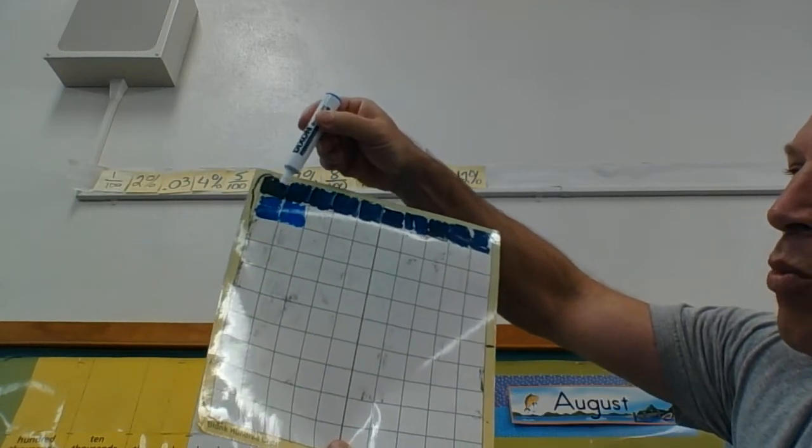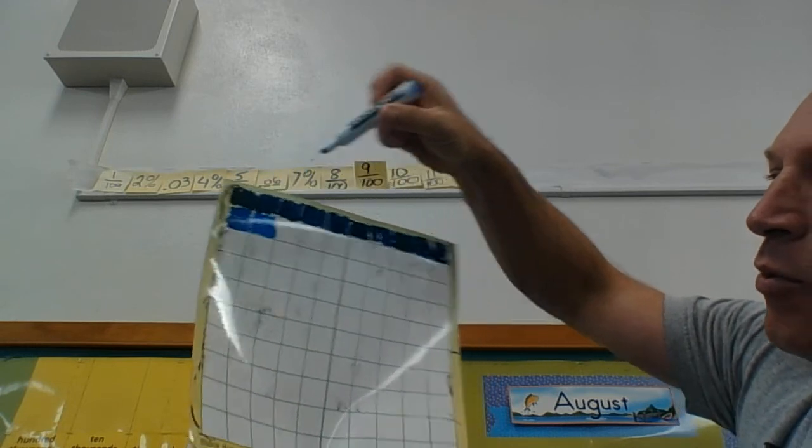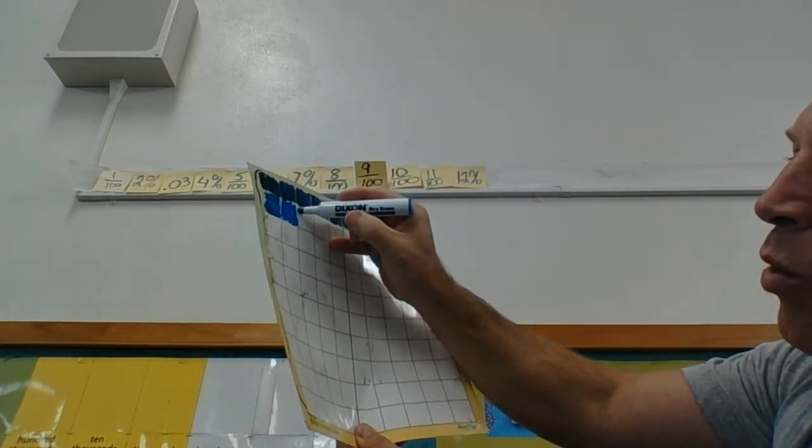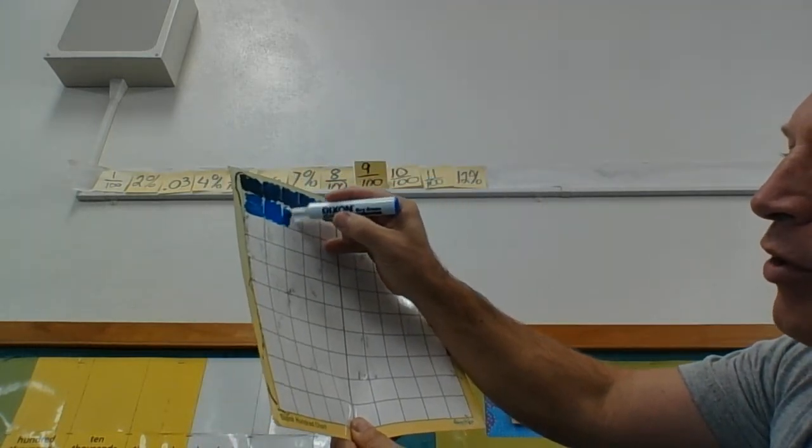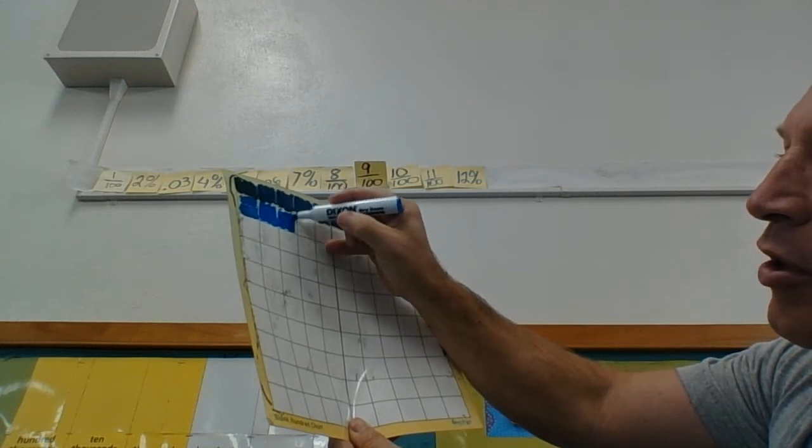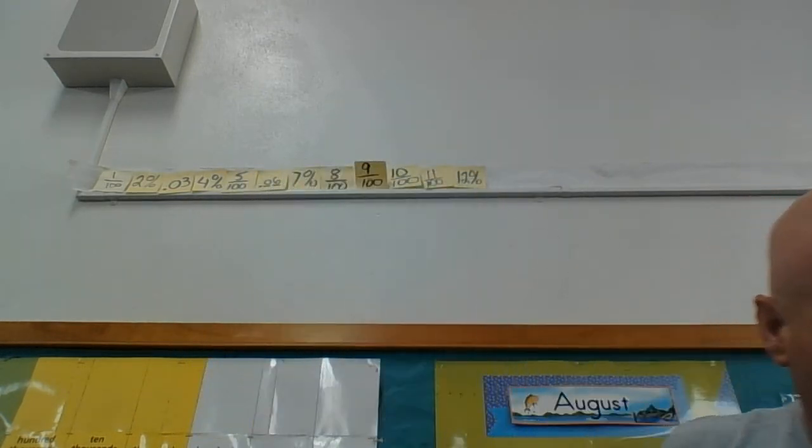It's hard to believe we started with 1/100th, and now, since we're adding 1/100th to 12/100ths, we now have 13/100ths.